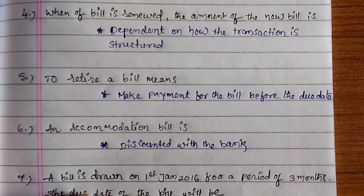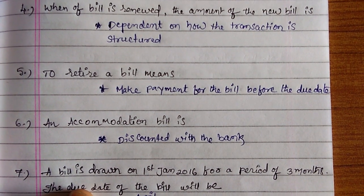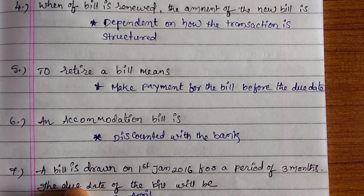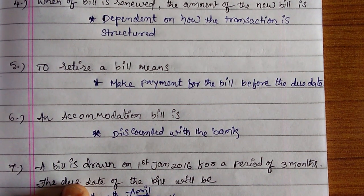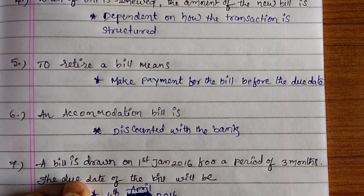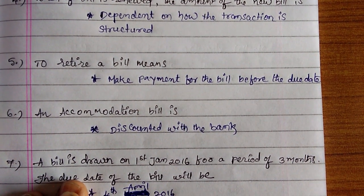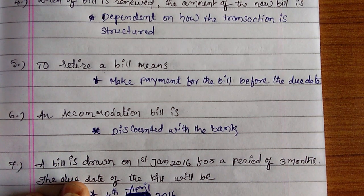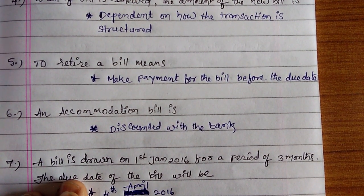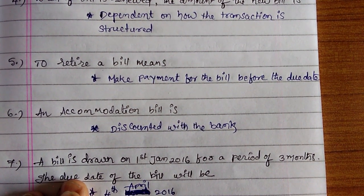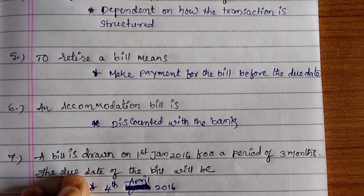Next one: to retire a bill means to make payment for the bill before the due date. If the drawee paid money before the due date, that is called retiring a bill. This is very important from the JAO point of view.